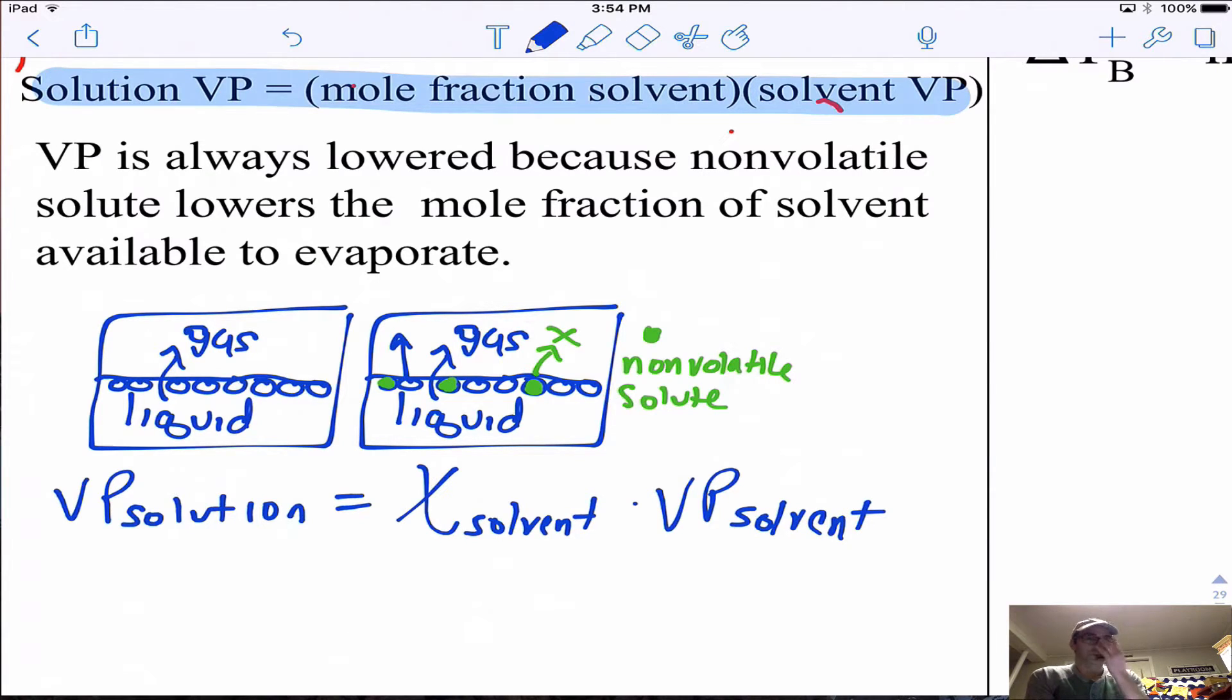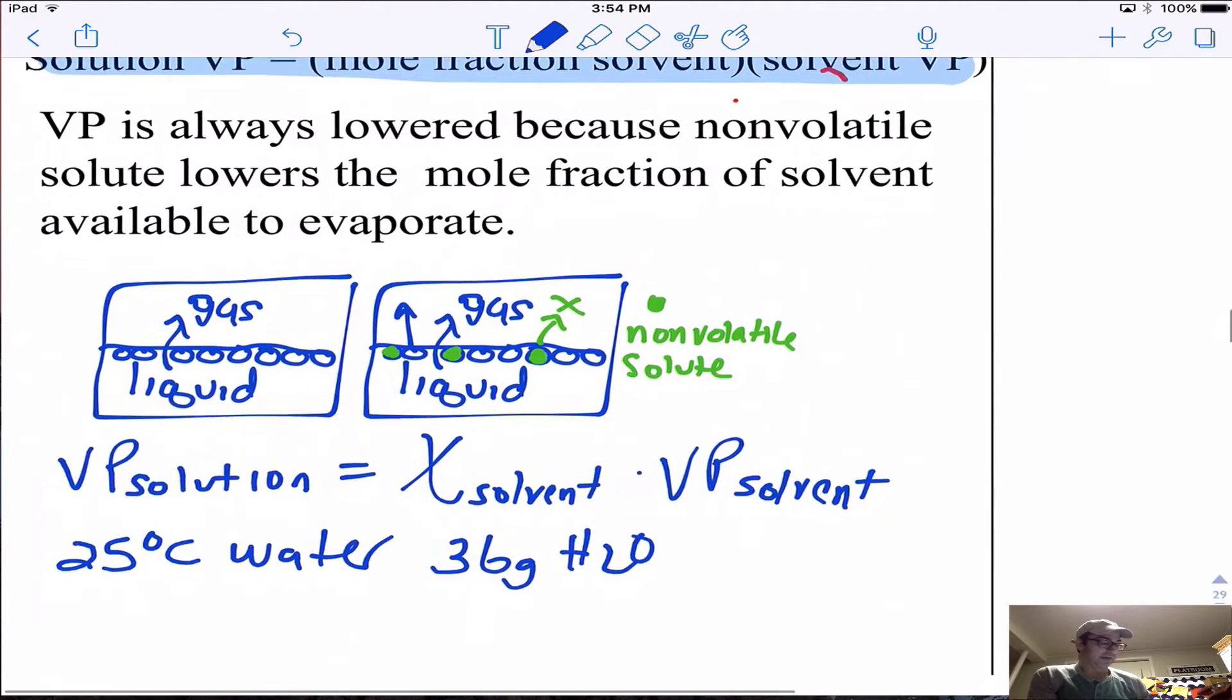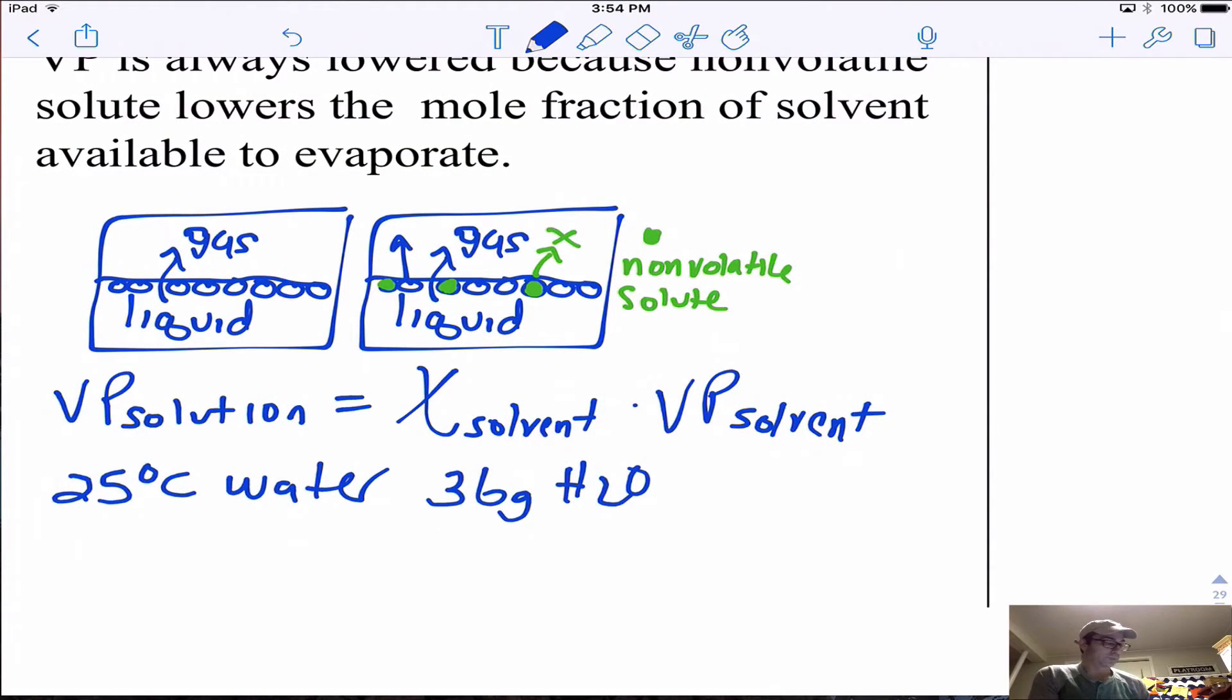Let's say we had some water at 25 degrees Celsius, and we have 36 grams of it. Into that water we put 0.1 mole of solute. Our water, one mole for every 18 grams, so we have two moles of water.